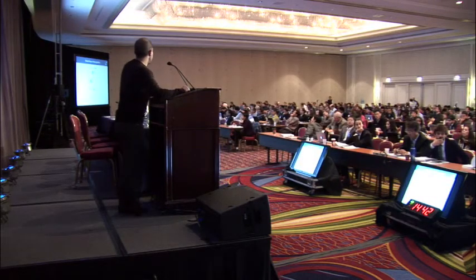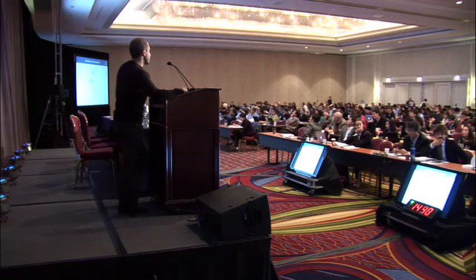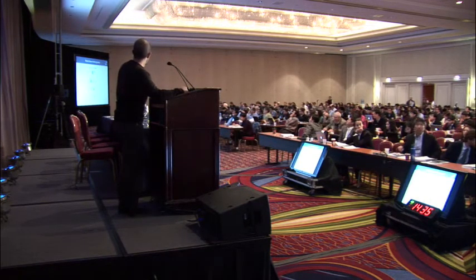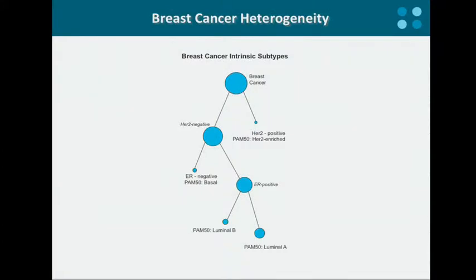As most of you know, breast cancer is an incredibly heterogeneous disease. It can actually be thought of as a collection of distinct diseases, and these diseases are mostly characterized by the status of hormone receptors ER and PR and growth factor receptor HER2. As you can see from the cartoon here, the largest fraction of breast tumors are positive for the estrogen and progesterone receptor and negative for HER2, and this definition largely identifies what we call luminal breast cancer.